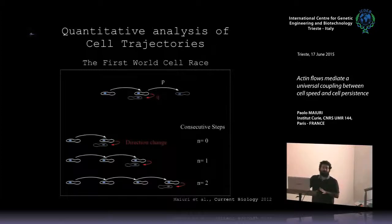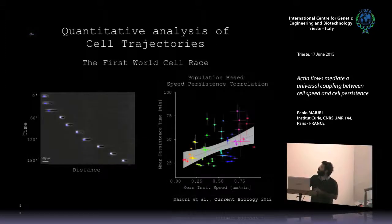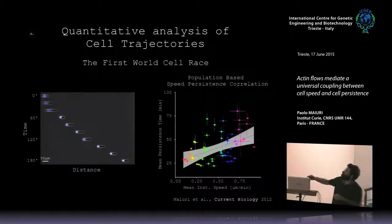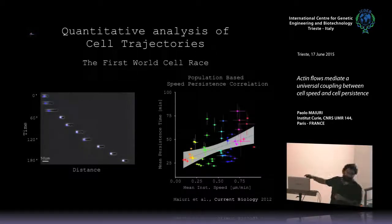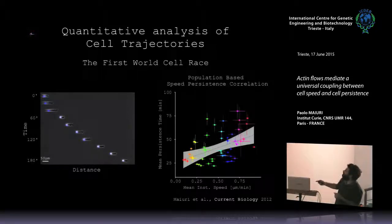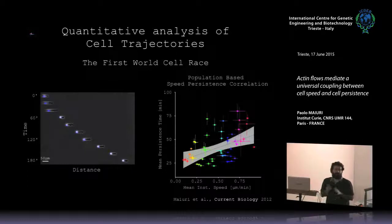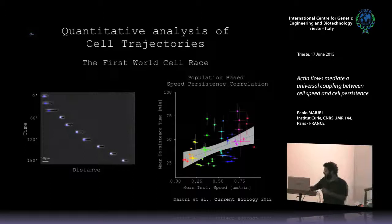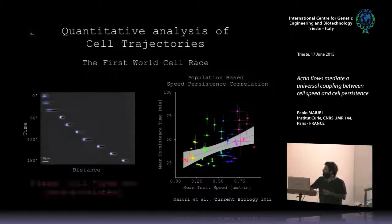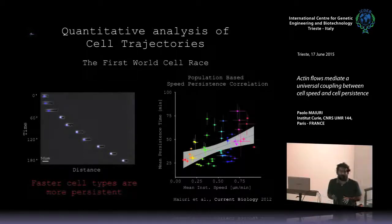More or less all the cells that we have respect this kind of behavior. Now we put together two things: how fast they move and how long they move in the same direction. What I found is that there exists a correlation between the mean speed of a population and its mean persistence. It means that faster populations are also more persistent.